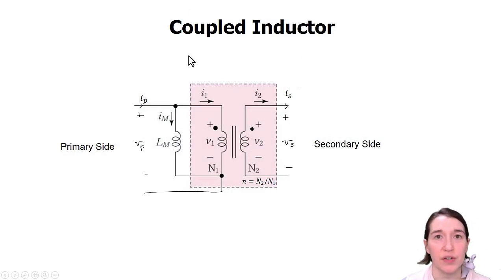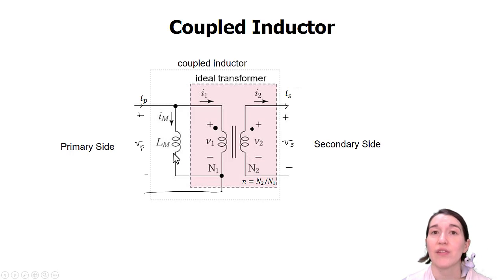Here we're talking about the coupled inductor which is used in flyback converters and its structure is very similar to a transformer in that it has a primary side and a secondary side, but it's a little bit different. You can see there's an ideal transformer in the component but also an inductor, a magnetizing inductance. And these two together form the coupled inductor.